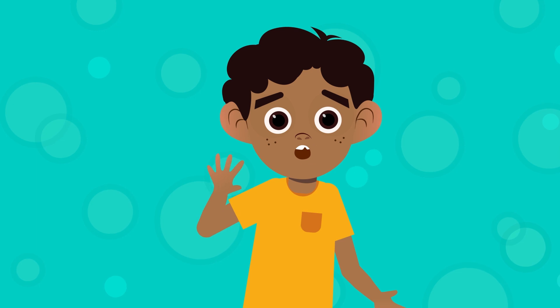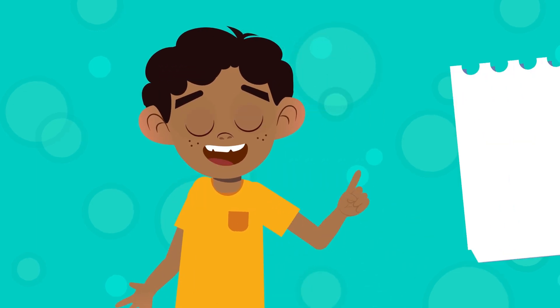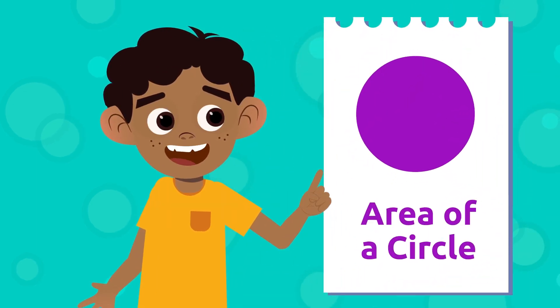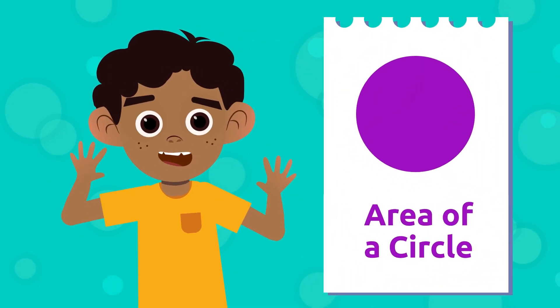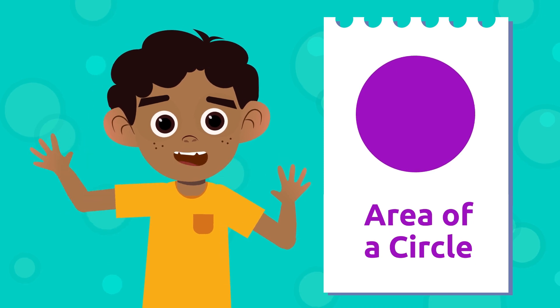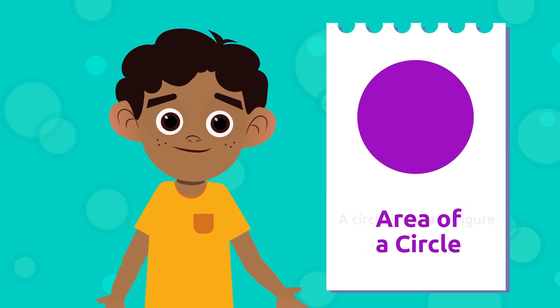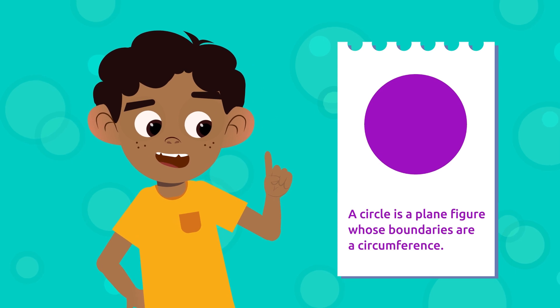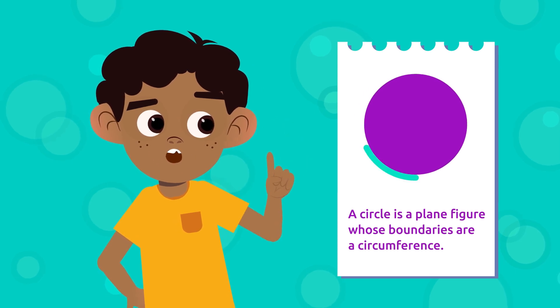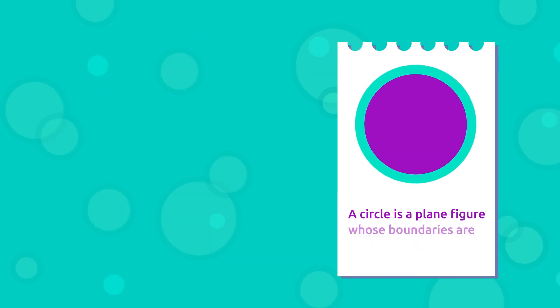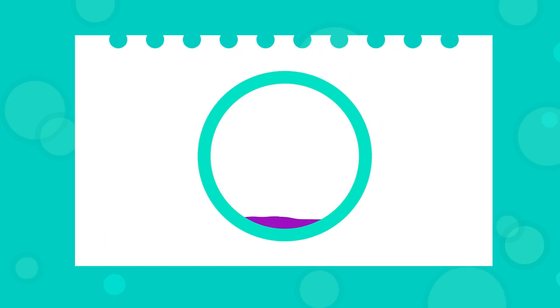Hello friends! Today we're going to explain how we calculate the area or surface of a circle. A circle is a plane figure whose boundaries are a circumference — meaning the circle is everything the circumference contains. In other words, the circle is the inside of the circumference.